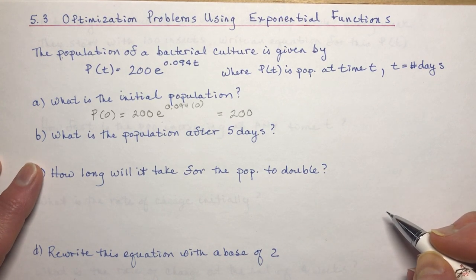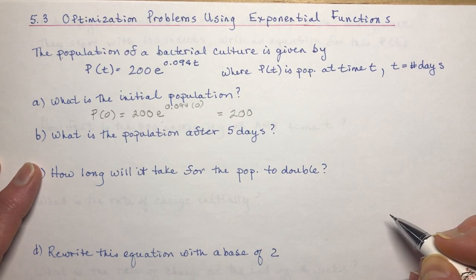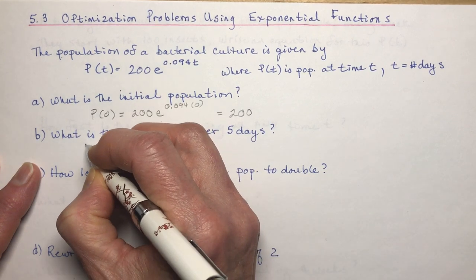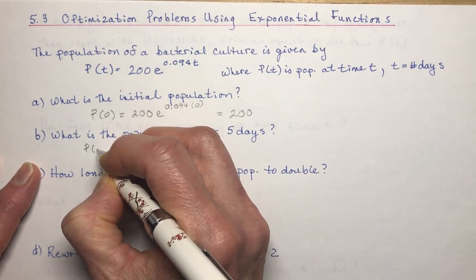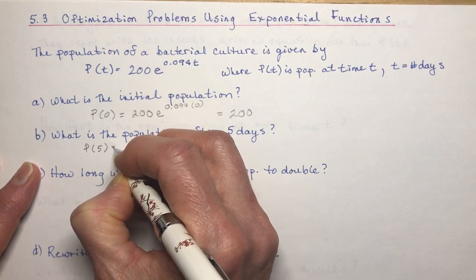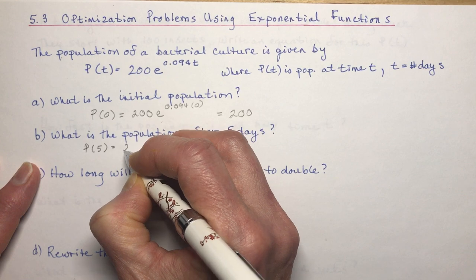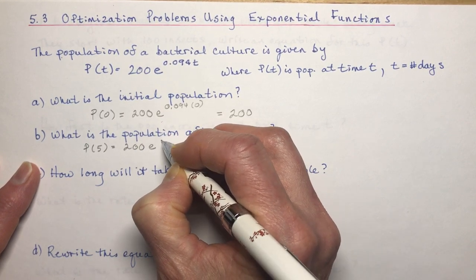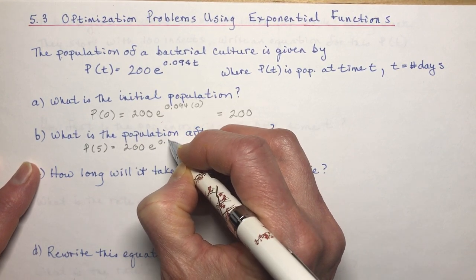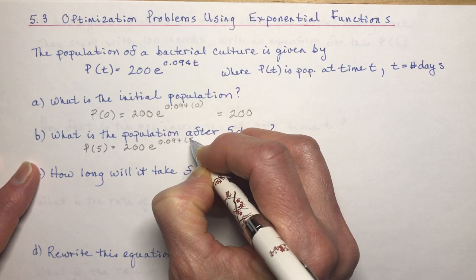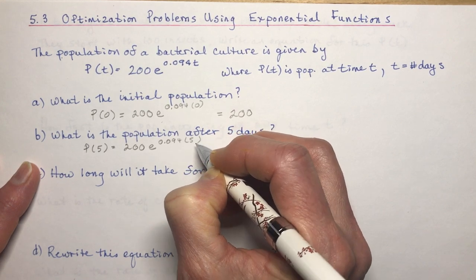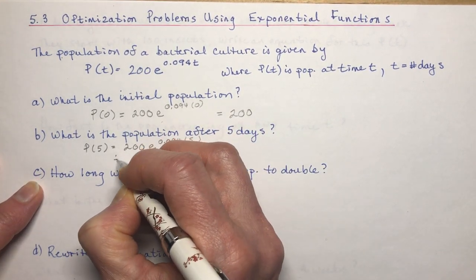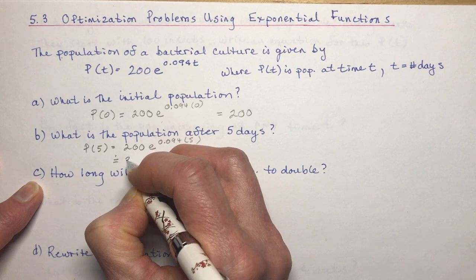What is the population after 5 days? That's another simple calculation — you don't even need calculus to do this. We calculate P(5) = 200 times E to the power of 0.094 times 5, and if you do that, you get about 320.